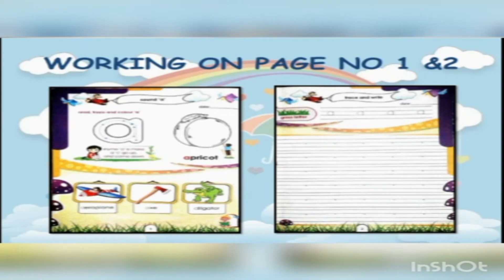Now in the next slide, kids please open page number 1 and page number 2 of your workbook Elite Series. On page number 1, there is A. When we rhyme it, we call it A. And when we trace it, we make a stroke go up and come down.